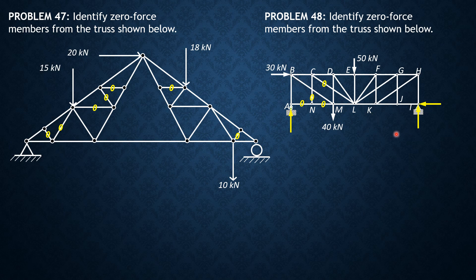We proceed to joint J. At joint J, the two are collinear and this is unique, so GJ is zero. Then we proceed to joint G. The two are collinear, but one of those members carries no force, so it's like there are only three members. The two remaining are collinear — this is unique — so GL carries no force.